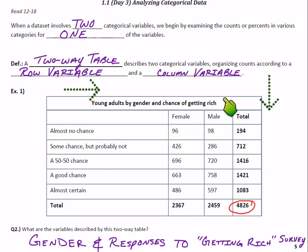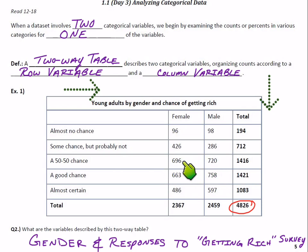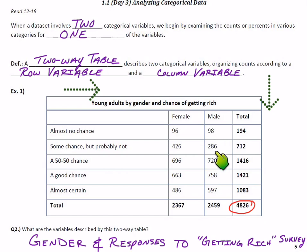Do we have groups of different sizes here? Yes. If you look at the total number of males surveyed versus the total number of females surveyed, it wouldn't be fair to just compare raw counts. For example, if more males responded '50-50 chance,' that's not convincing on its own because more males were surveyed overall. Since we surveyed a different number of males than females, it's fairer to use percentages.